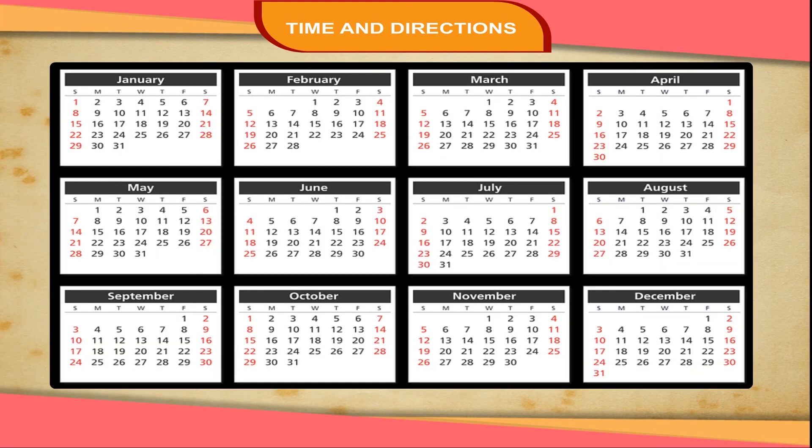April, June, September and November have 30 days. Other months have 31 days. February has 28 days.